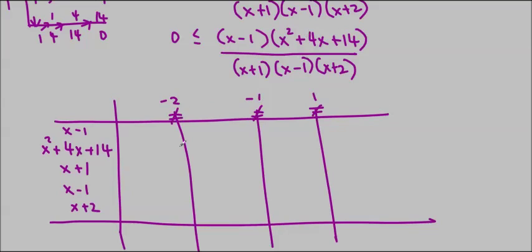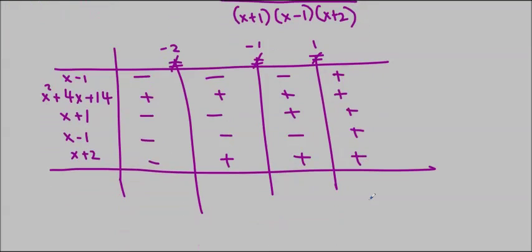x squared plus 4x plus 14 has no zeros. So x minus 1, we'll just fill in the chart for it. x squared plus 4x plus 14, as I said, is always positive. It's always above the x-axis. x plus 1, x minus 1 again, so just copy the same thing. And then x plus 2. Multiply them together, using those same skills from before.